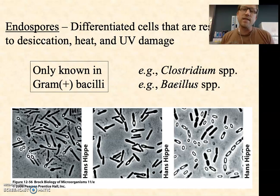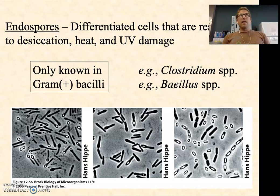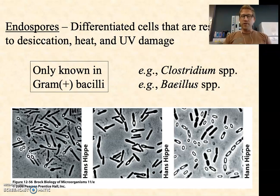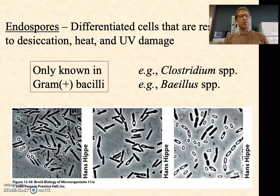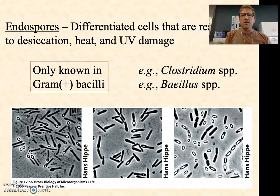There are species within both of these genera that can form endospores, and we'll talk later in the semester about how important endospores are in the diseases that these two genera cause. In endospore form, they're impervious to antibiotics and impervious to most of our cleaning and sterilizing techniques. So these spores can be a real thorn in our side when it comes to these bacteria spreading.